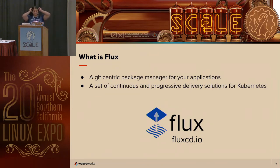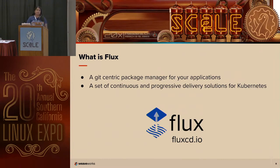What is Flux? Flux is a Git-centric package manager for your applications. It's not just Git — there are several sources that can be used with Flux, such as S3 buckets, OCI registries, and other things like that. It provides a set of continuous and progressive delivery solutions for Kubernetes, and it's a natural extension of the benefits of Kubernetes because it was created with Kubernetes in mind. At the core, Flux continuously monitors your version control system and applies the desired state stated there.